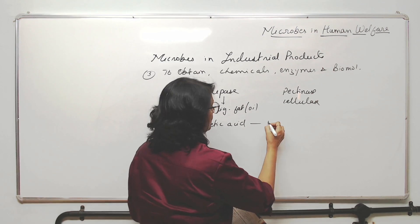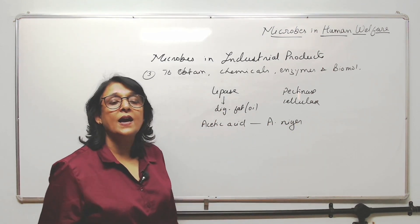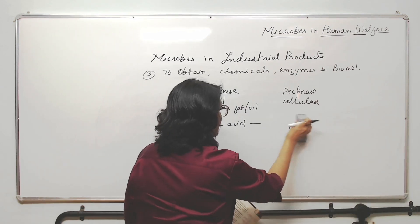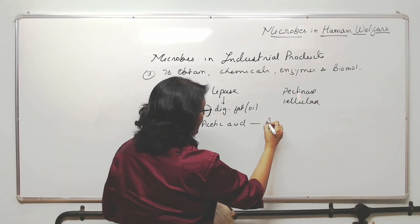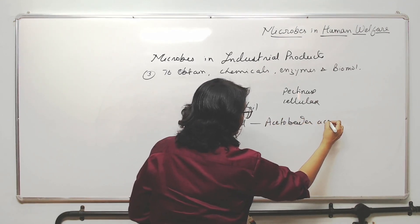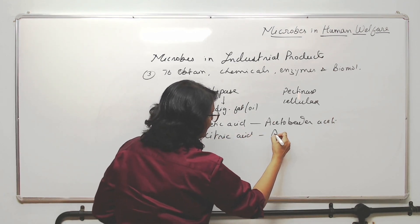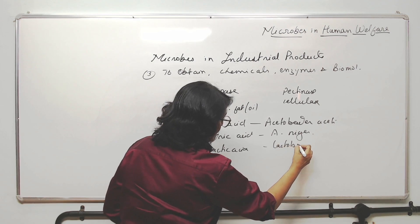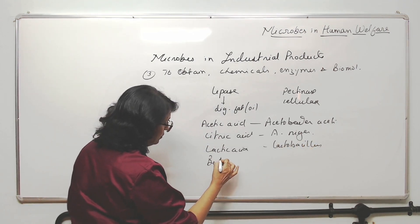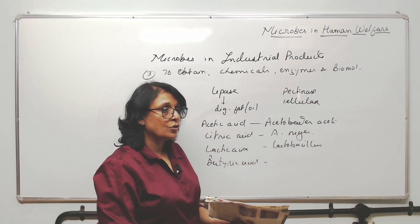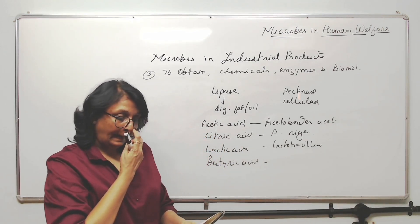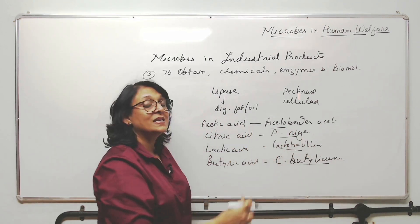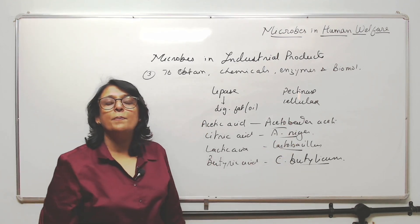These questions are asked in match-the-column type. The microbes used are: Aspergillus niger for citric acid, Acetobacter aceti for acetic acid, Lactobacillus for lactic acid, and Clostridium butylicum for butyric acid. So we are using all these microbes to obtain these organic acids.